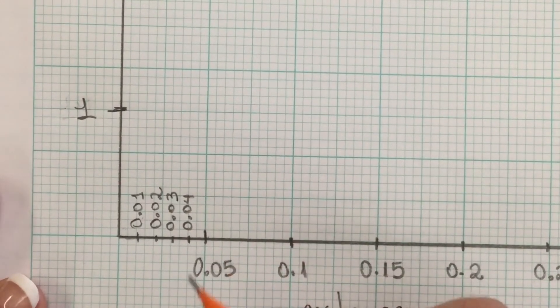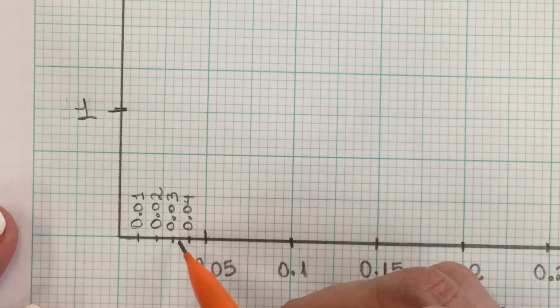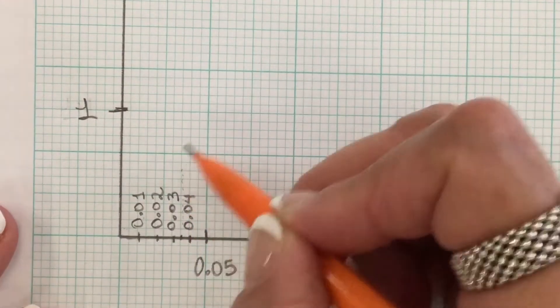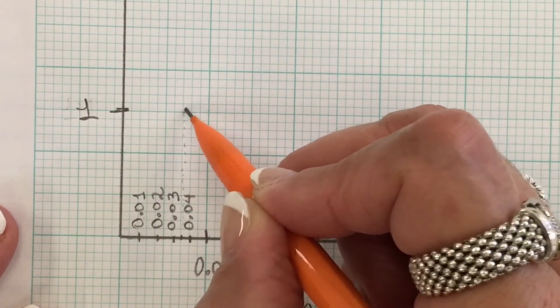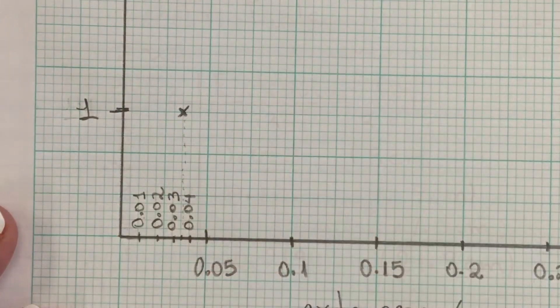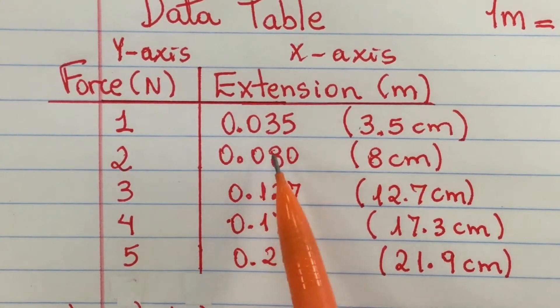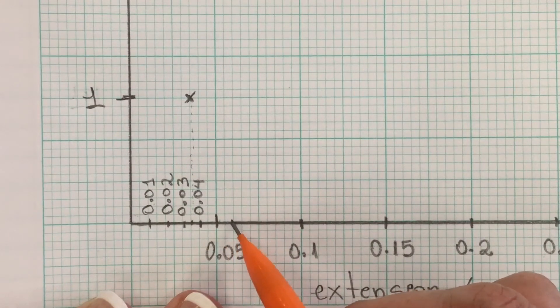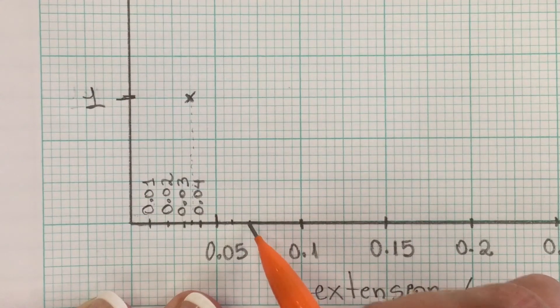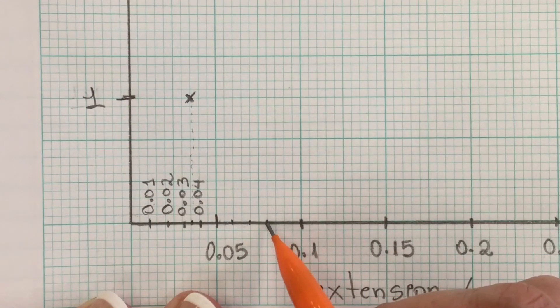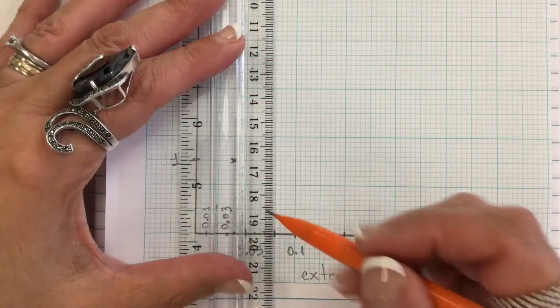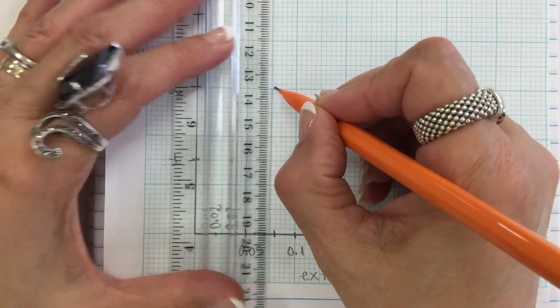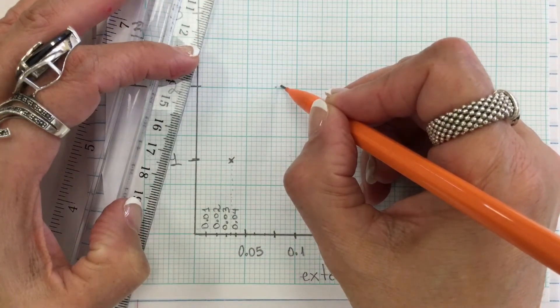So my 0.035 should be right here between those two. I'm going to bring this up, and that will be my first intersection. My second one is 0.08, so 0.05 is here, 0.06, 0.07, and this is 0.08 right here. Now I'm going to connect 0.08 with 2.